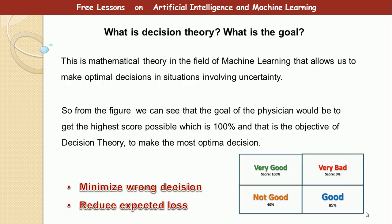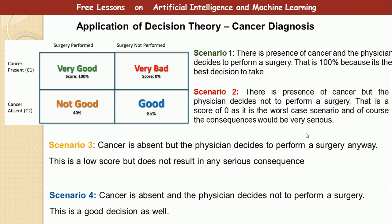What is decision theory and what is the goal of decision theory? Decision theory is a theory in the field of machine learning that allows us to make optimal decisions in situations involving uncertainty. The goal of decision theory has two parts: one, minimize wrong decisions; and two, when wrong decisions are made, reduce the expected loss. The losses incurred by the two types of wrong decisions are different.